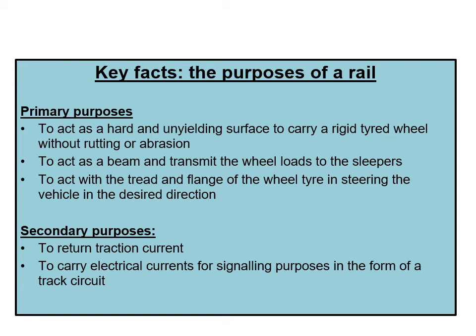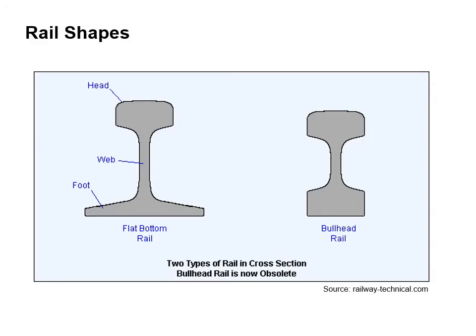The secondary purpose is to return traction current. It can also carry electrical currents for signalling purposes in the form of a track circuit. Looking at rail shape and general terms: the flat bottom rail consists of the foot, the web and the head. Another section is the bull head rail, which is now obsolete but may still be seen when working with the permanent way crew.